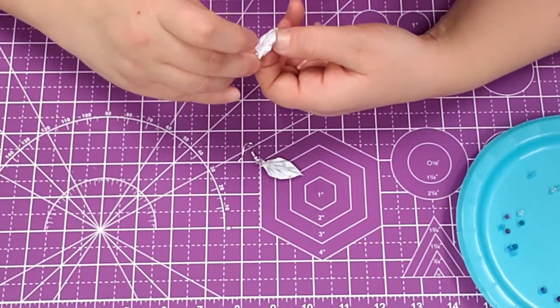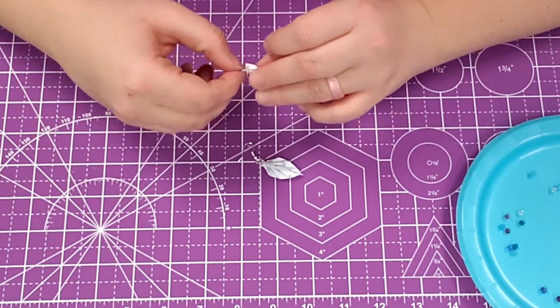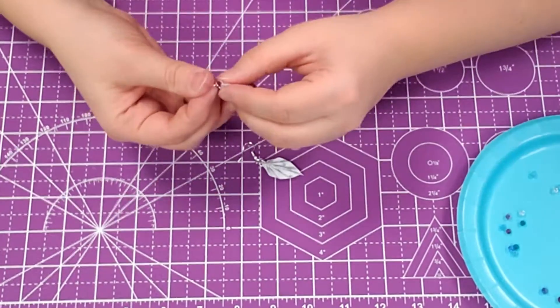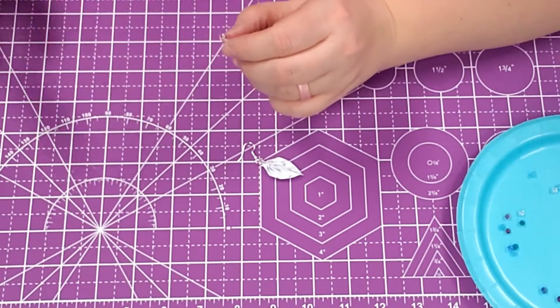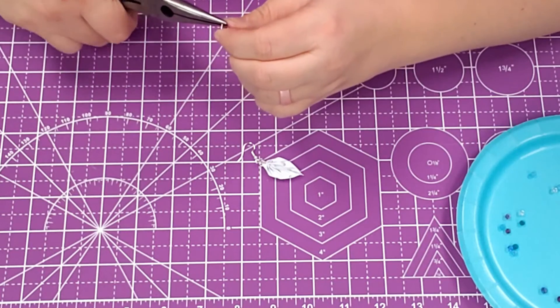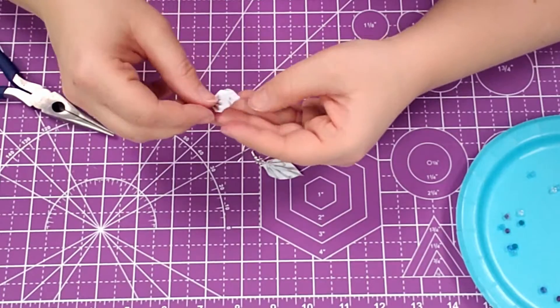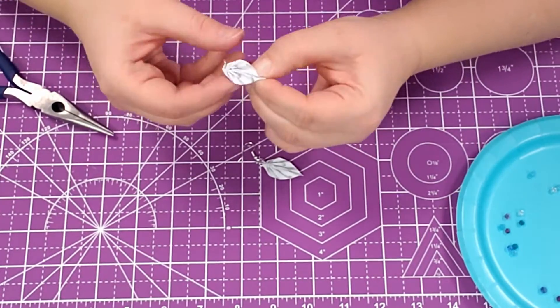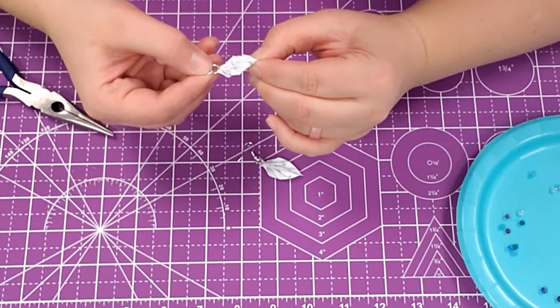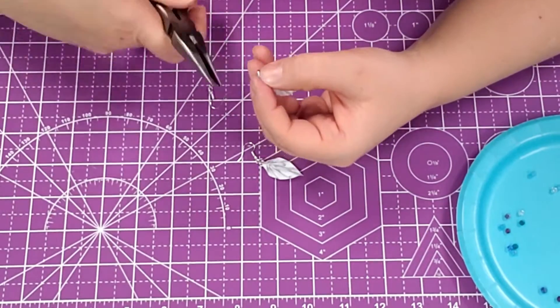All right, so the last thing to do is go ahead and put that jump ring through the top. I can get it to go. There we go. And then I'll add this one on there. I like it dangling a little bit lower. And then last but not least, add this.